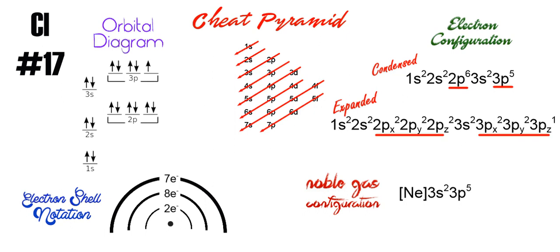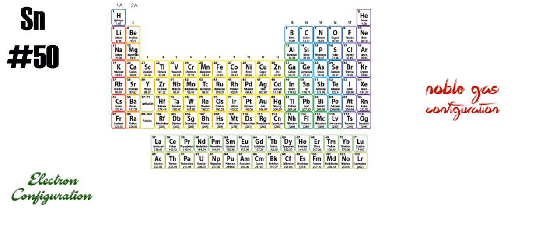All right, let's take a look at another example that's a little bigger and how we can do this much faster. So we're going to look at tin and it's number 50. So we could go through a whole cheat pyramid and an orbital diagram and spend all that time, or if you have a little understanding of the periodic table you can fly through this much faster.